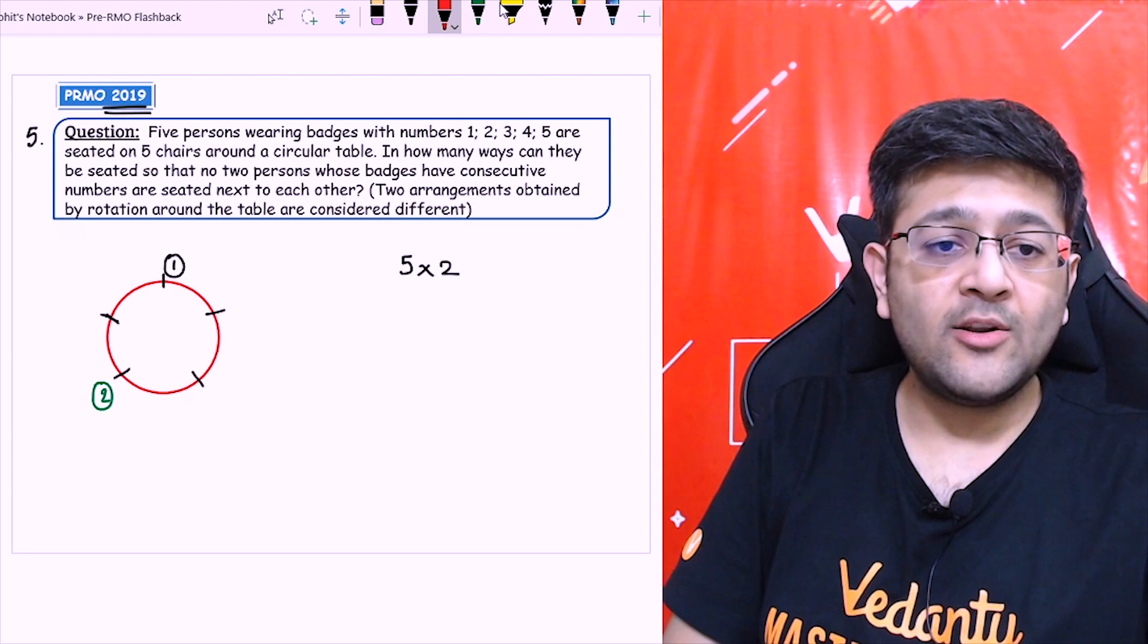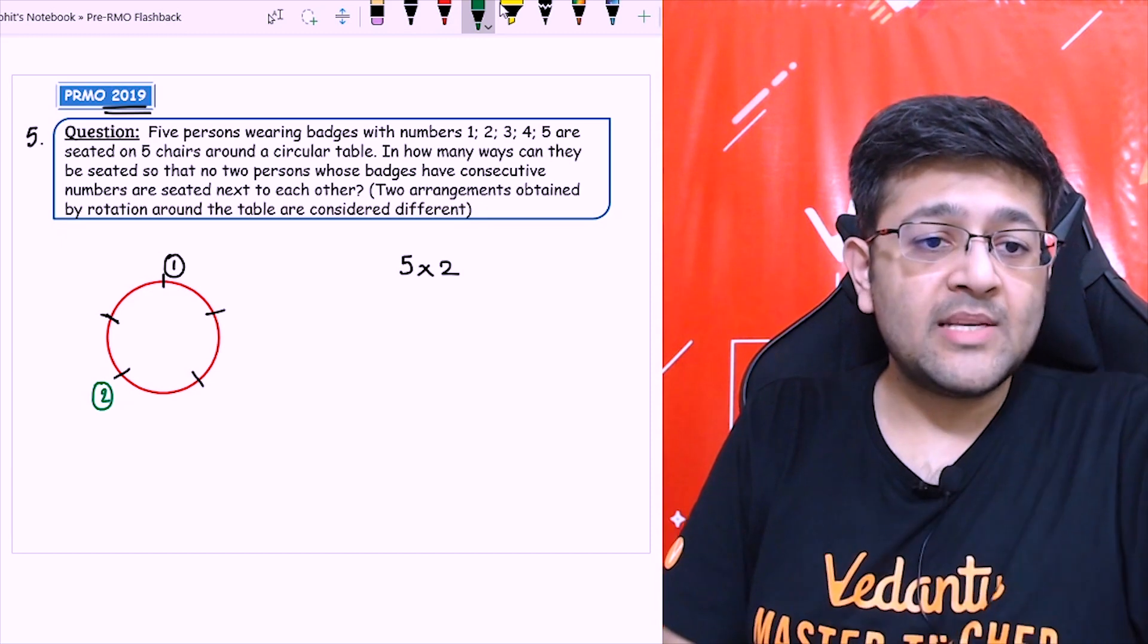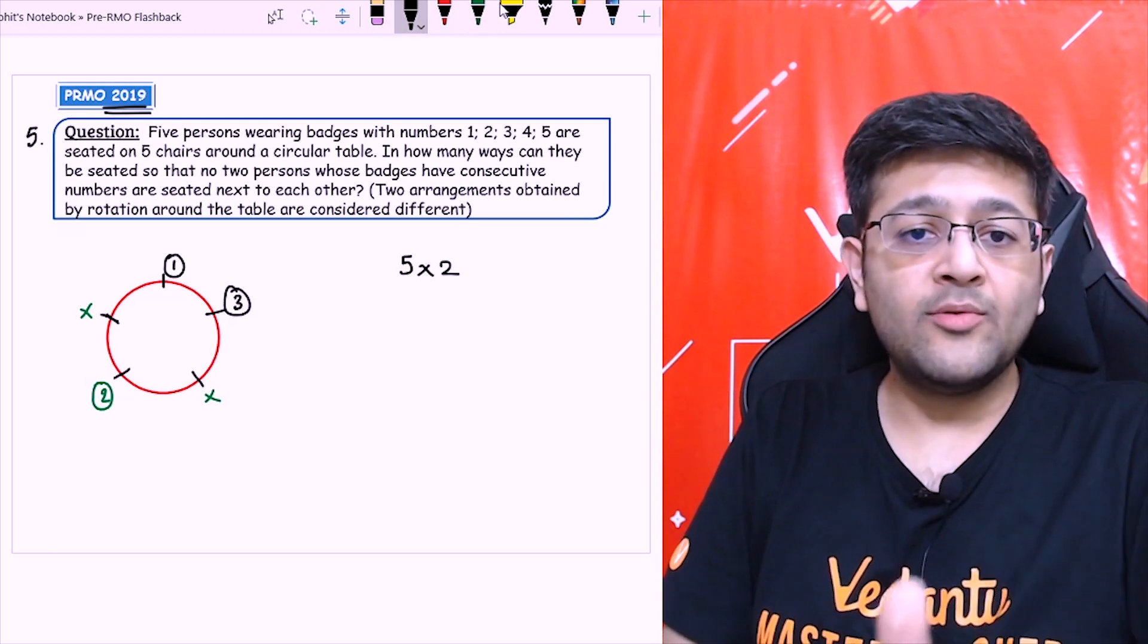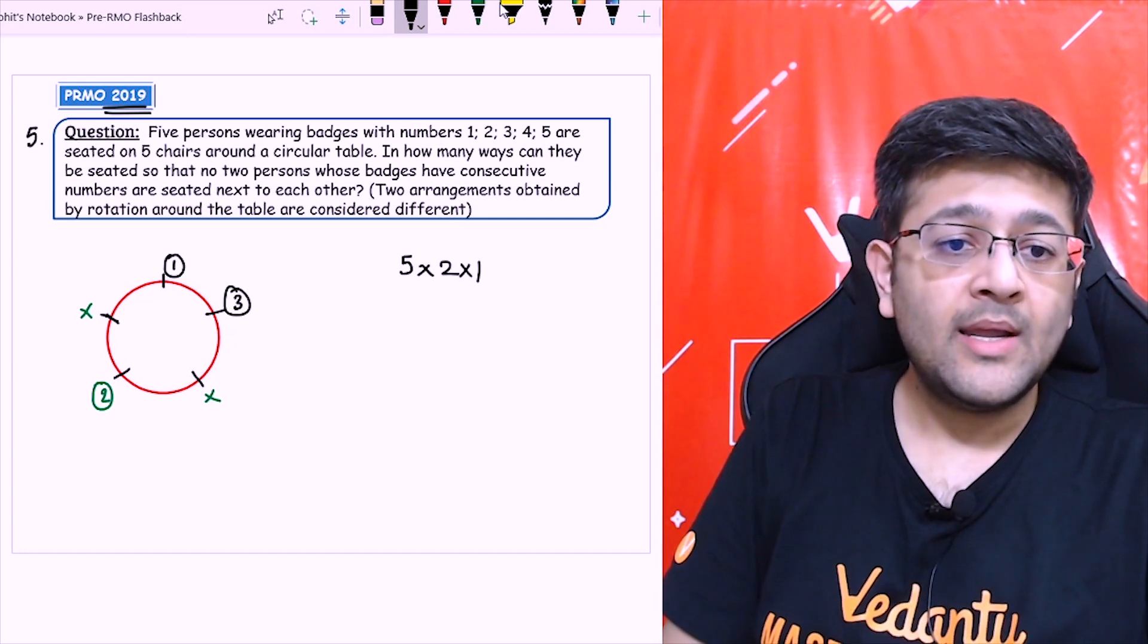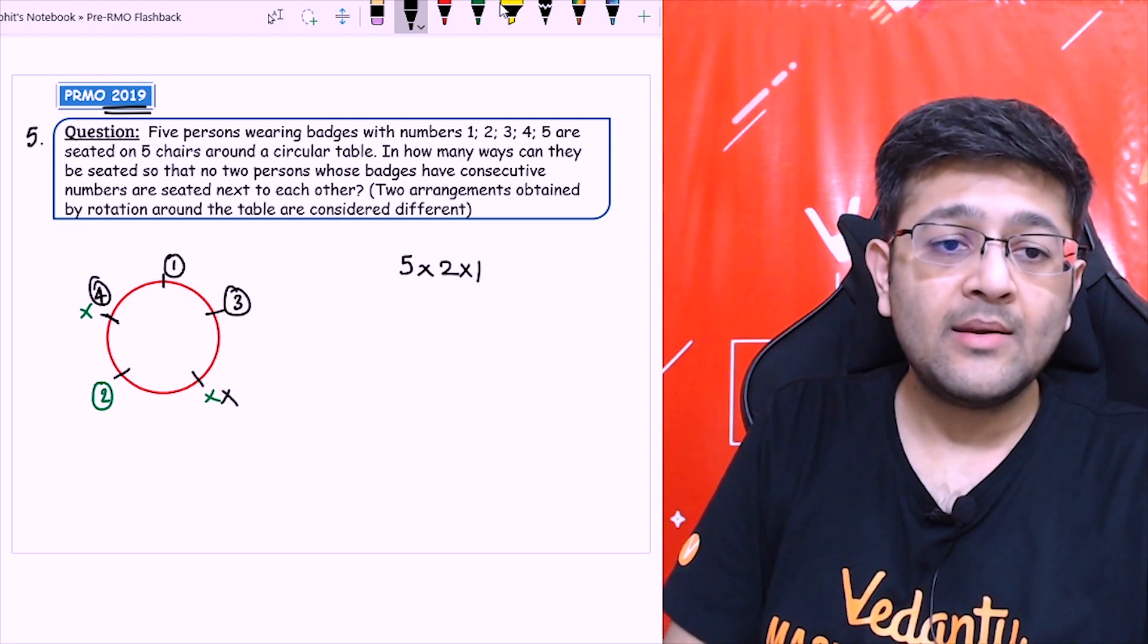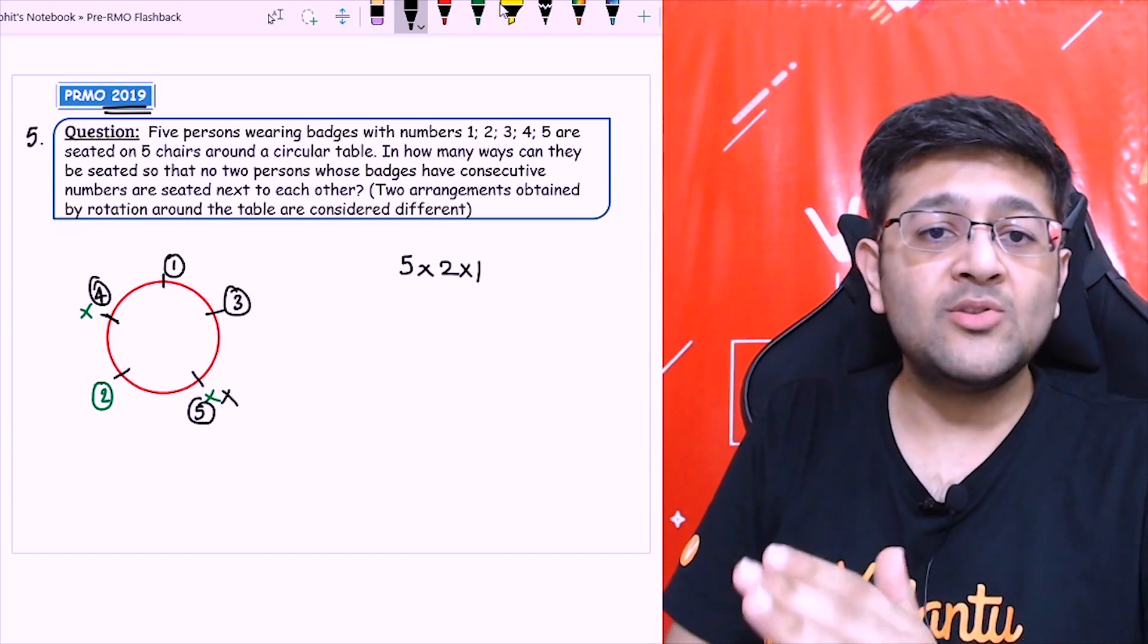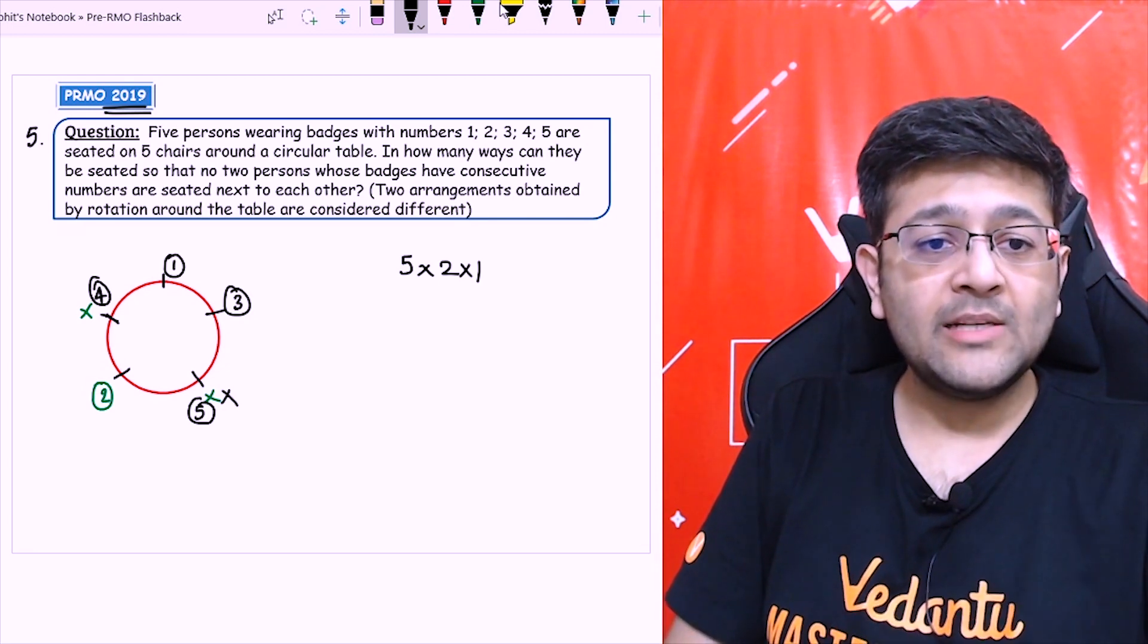Once I have fixed the seat of 1 and then 2, let's see for seat number 3. Now, this person having badge number 3 cannot come here or here. So it automatically means that 3 has to come here, so into 1. Now, coming to 4th badge number 4, if the badge number 4 cannot come here, it has to come here only. So badge number 4 will be here, and the remaining position is for 5. Actually, the persons having the badge number 3, 4 and 5 does not have any other option. They just have one option only. So that is one of the case.